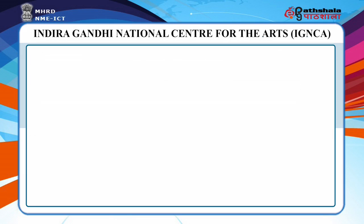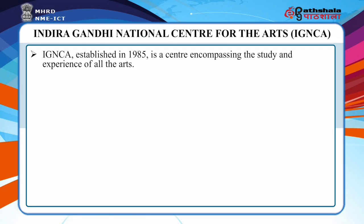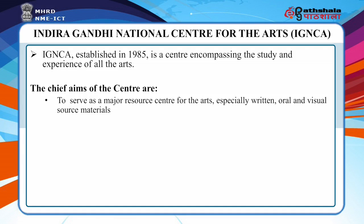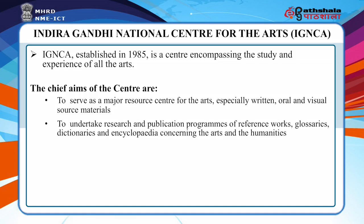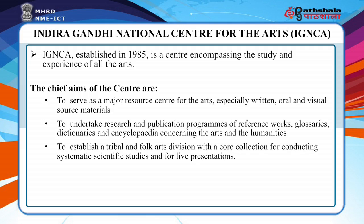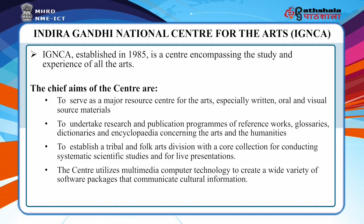A major organization in the field of humanities is the Indira Gandhi National Centre for the Arts, IGNCA. Established in 1985, IGNCA is a centre encompassing the study and experience of all the arts. The chief aims of the centre are to serve as a major resource centre for the arts, especially written, oral, and visual source materials; to undertake research and publication programs of reference works, glossaries, dictionaries, and encyclopedias covering the arts and humanities; to establish a tribal and folk arts division; and to utilize multimedia computer technology to create a wide variety of software packages that communicate cultural information.